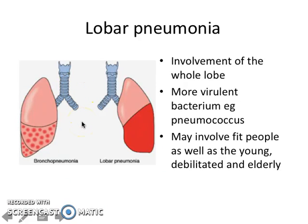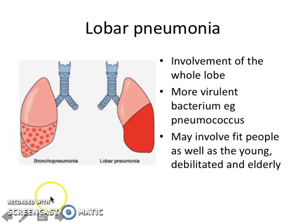Next is lobar pneumonia. Lobar pneumonia involves the whole lobe compared to bronchopneumonia, which has a patchy pattern. It is usually associated with more virulent bacteria, for example pneumococcus, but sometimes patients with bronchopneumonia can evolve into lobar pneumonia if not treated. Bronchopneumonia and lobar pneumonia may share the same virulent bacterium. Lobar pneumonia can also involve fit people, as well as the young, debilitated, and elderly.